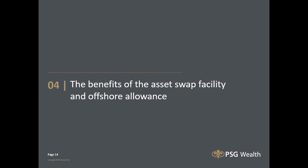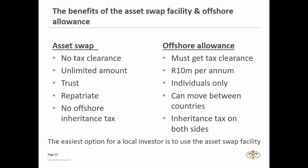The third point is the best way to take money offshore. Let's look at the asset swap facility. With the asset swap, you don't need any tax clearance to get your money offshore. It covers an unlimited amount and you can invest via a trust, as an individual, or through a company. When you decide to sell your investment, you must repatriate the money. In the event of death, there is no offshore inheritance tax for the individual, company, or trust — it will only be taxed in South Africa.